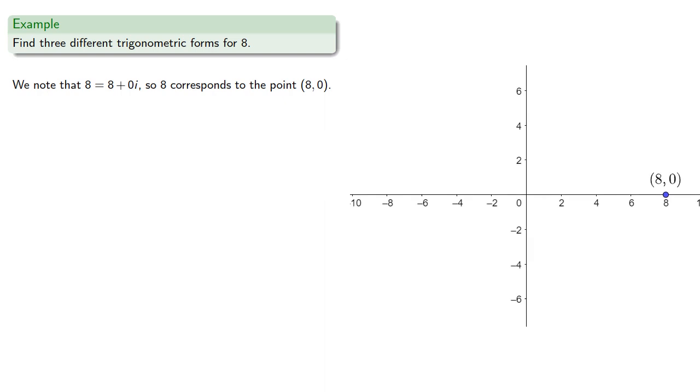It's important to keep in mind that the polar coordinates for a point are not unique. Several polar coordinates can describe the same point, and this will become important. So let's find three different trigonometric forms for 8. We note that the value 8 is the same as 8 plus 0i. And in geometric form, this corresponds to the point (8, 0). And we can find three different sets of polar coordinates for the point (8, 0).